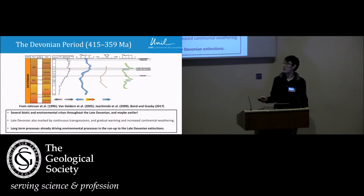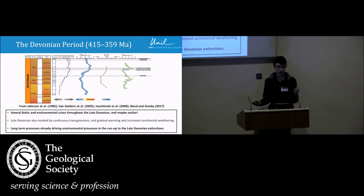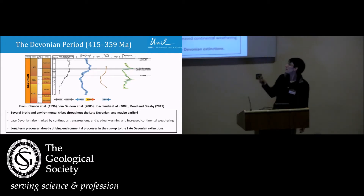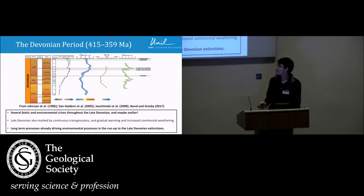And this is one thing which is odd about the Devonian mass extinction — it's not just one big bang like the end-Cretaceous might have been. There are a lot of biological events coming in throughout.